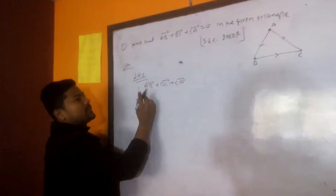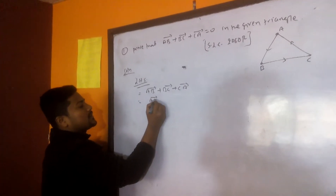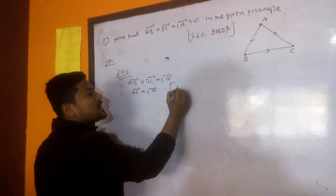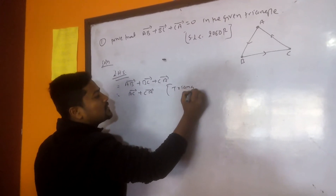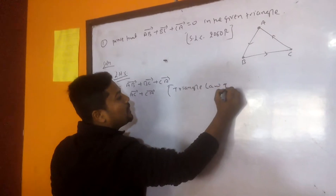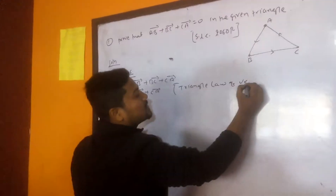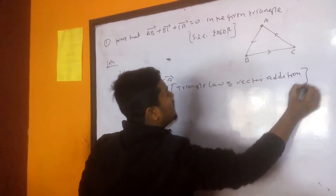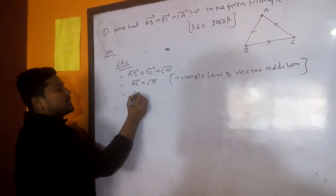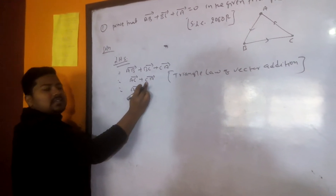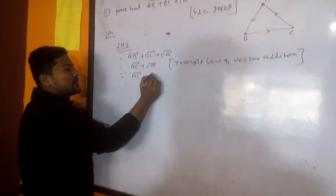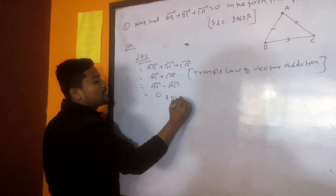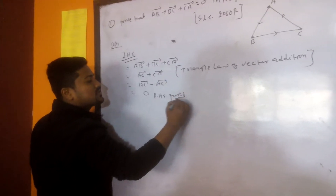So AB vector plus BC vector equals AC vector, plus CA vector. Now AC vector plus CA vector — if you write AC then it is minus AC, which equals zero. RHS proved. These are very easy questions.